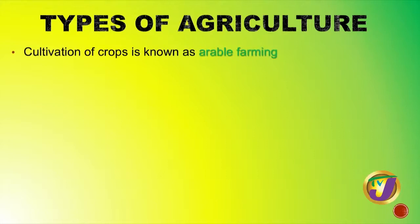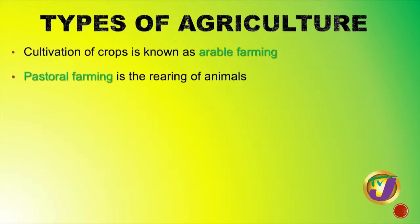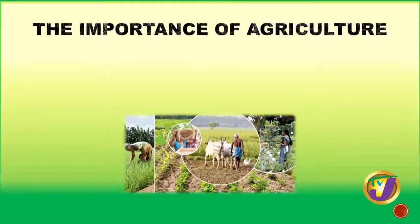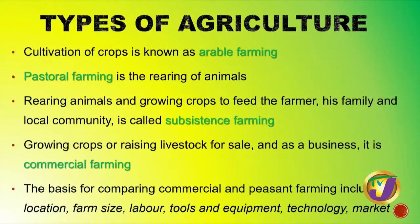There are different types of agriculture. Arable farming speaks to the cultivation of crops only. Pastoral farming looks at the rearing of animals. Subsistence or peasant farming is practiced by a farmer who engages his family, rearing animals and growing crops to feed the farmer and his family in the local community. Commercial farming involves the growing and raising of livestock as a business or for export and sale.